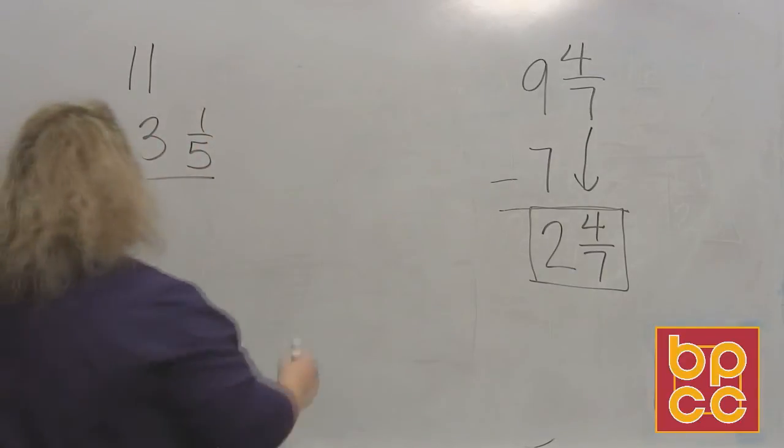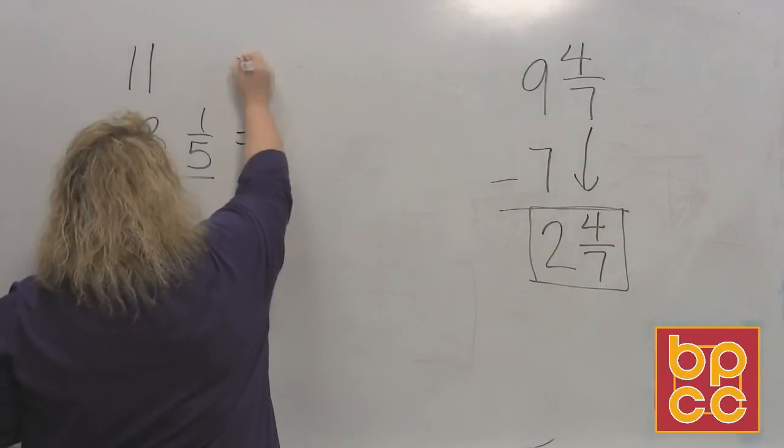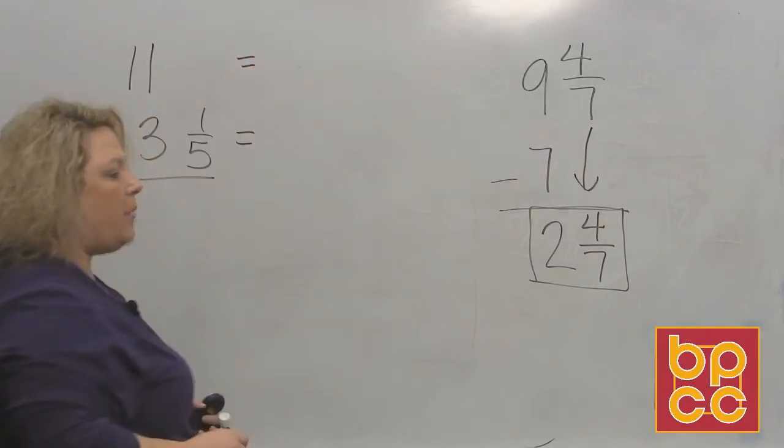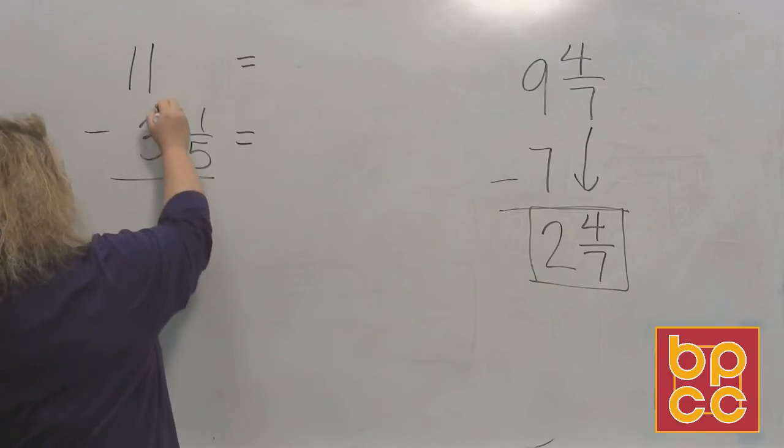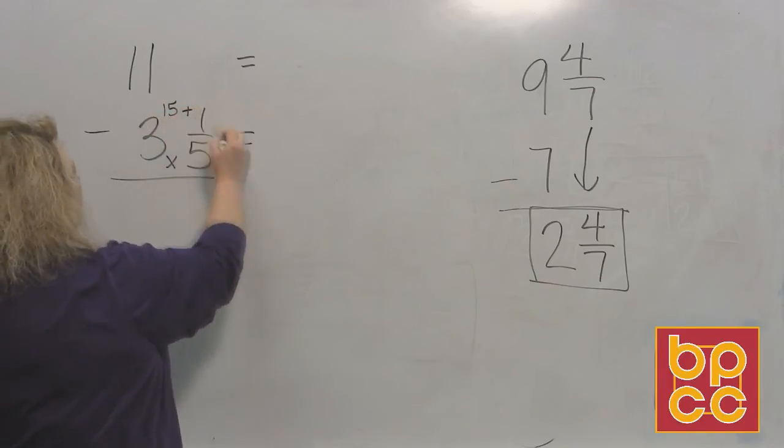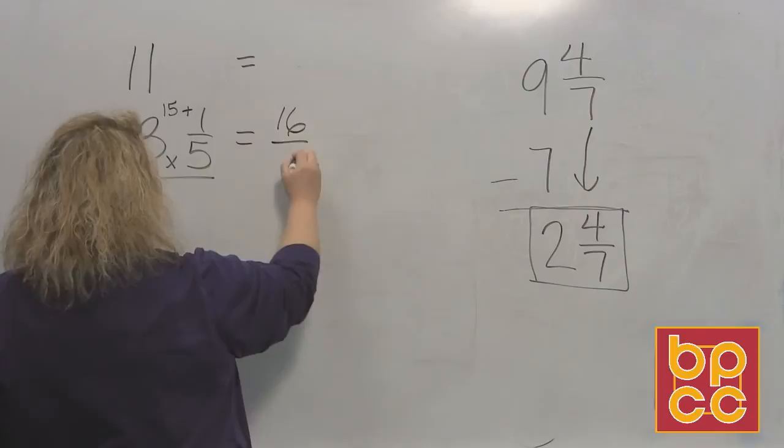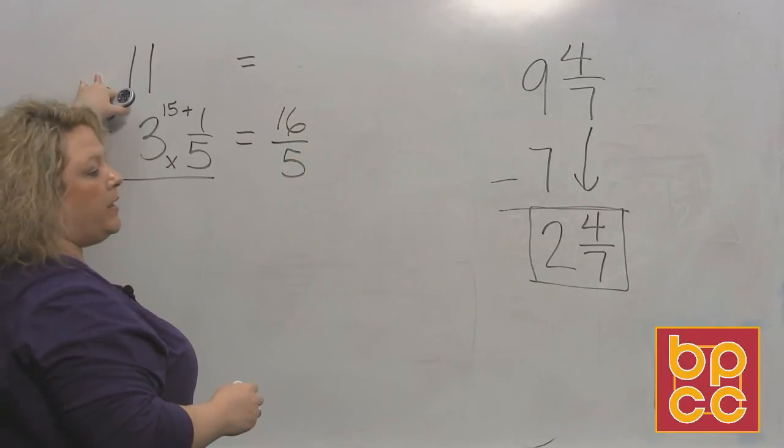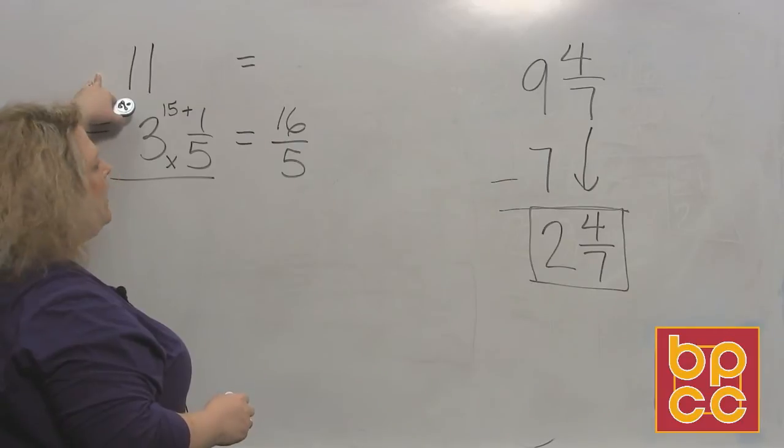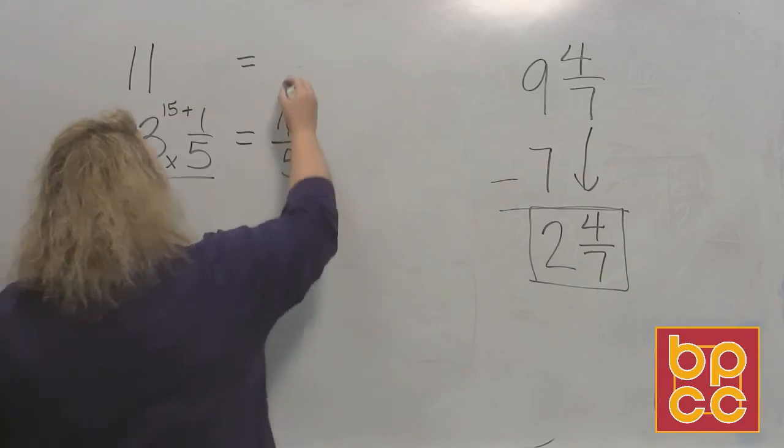I'm going to move it over so I have some more room to work it out. So I want to rewrite these as improper fractions first. So I do 5 times 3 is 15. 15 plus 1 makes 16 over 5. And 11 is what we call a real number, which is a whole number, and all whole numbers have an understood 1 under them.